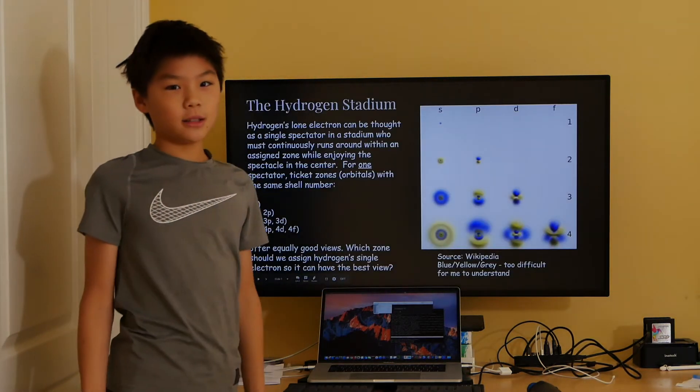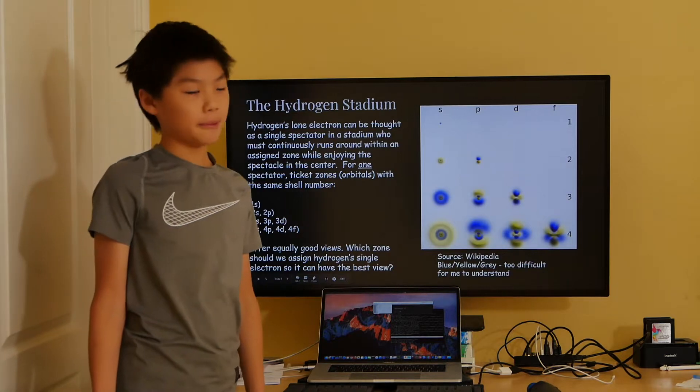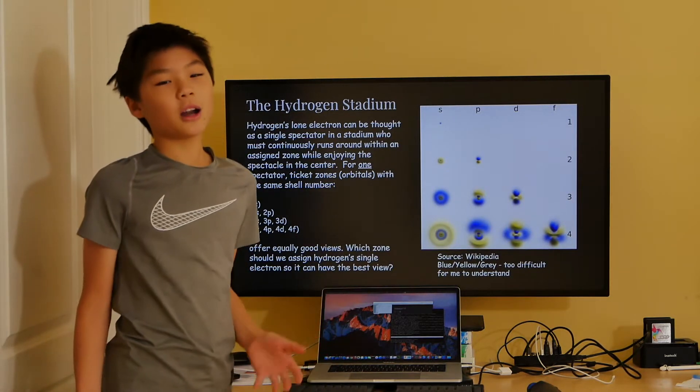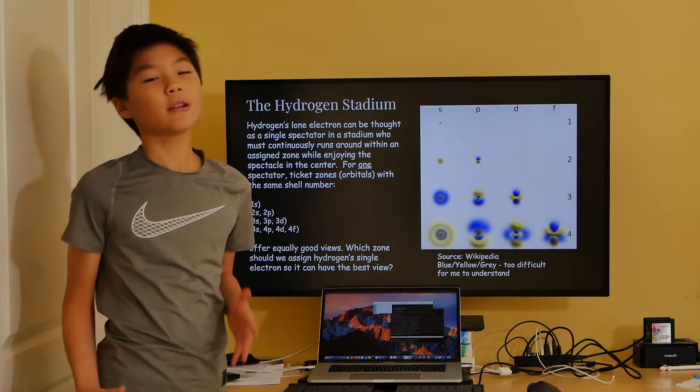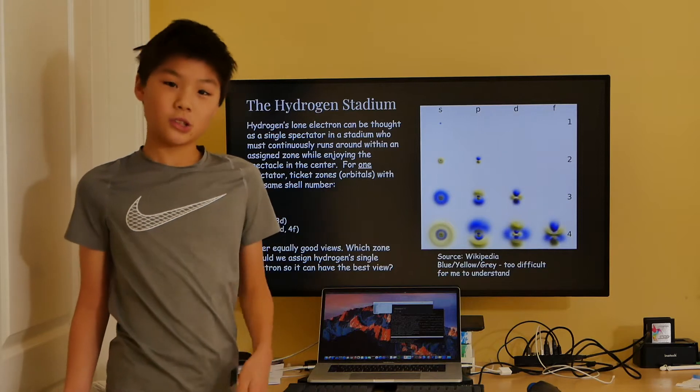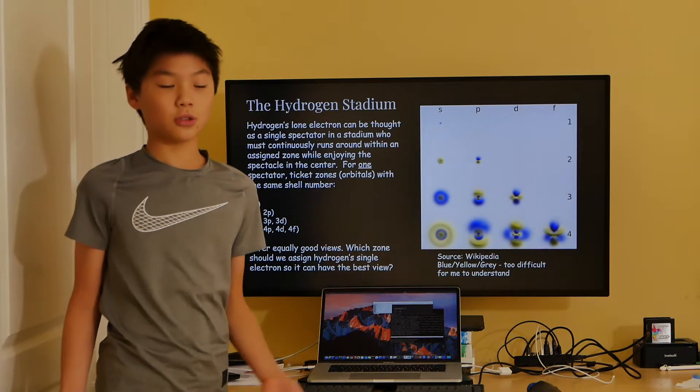One explanation my dad suggested was for me to go back to the hydrogen atom and to think of it as a stadium, where the single electron can be thought of as a spectator who has to run around continuously in its assigned zones. These zones have names: 1s, 2s, 2p, 3s, and 3p.